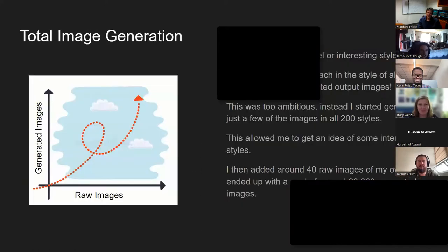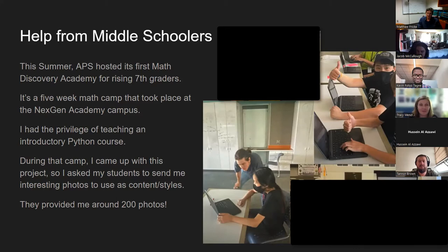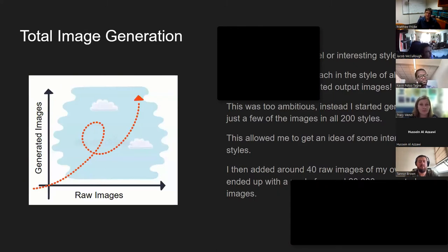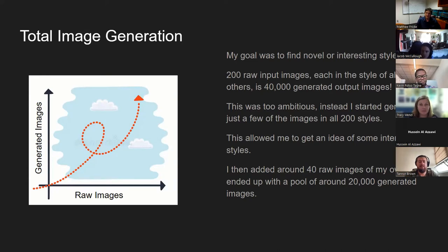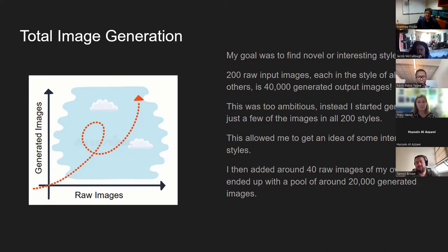That was the full camp, and I only taught about 15 to 20 of them total. They sent me way more photos than I expected — 200 images in the style of all the others, that's 200 squared, which is 40,000 images. This was before I was on Condor, so I was just using Xena and thought this was going to take forever. I still haven't generated all 40,000. I took some of them, generated them in all 200 styles, found the interesting styles, then went through the full list in those styles. I also added 40 images of my own — pictures of me, my cats, and some images classically used in style transfer.